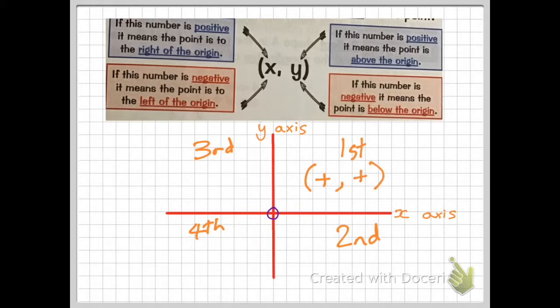If you have two positive numbers, then your coordinate will appear in this first quadrant. If you have a positive number and a negative number, then your coordinate will go in the second quadrant. If you have a negative number and a positive number, then your coordinate will go in the third quadrant. If you have a negative number and a negative number, then your coordinate will go in the fourth quadrant.